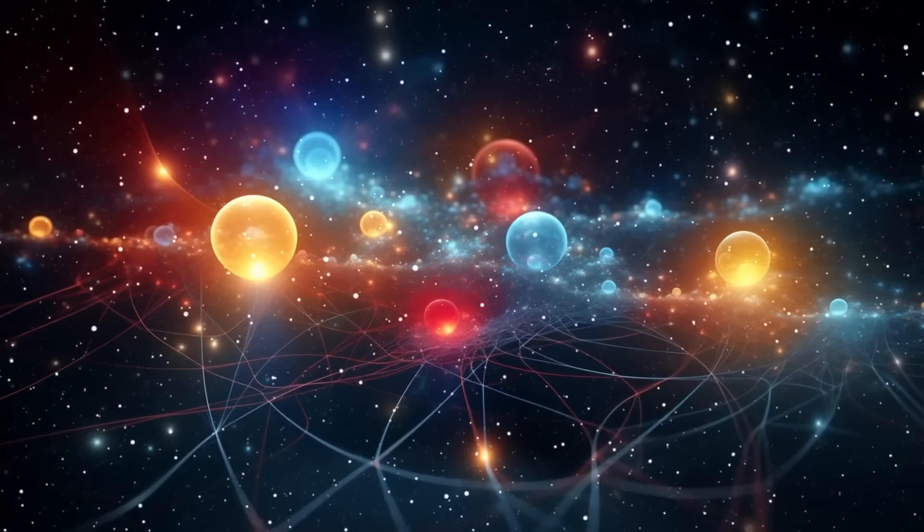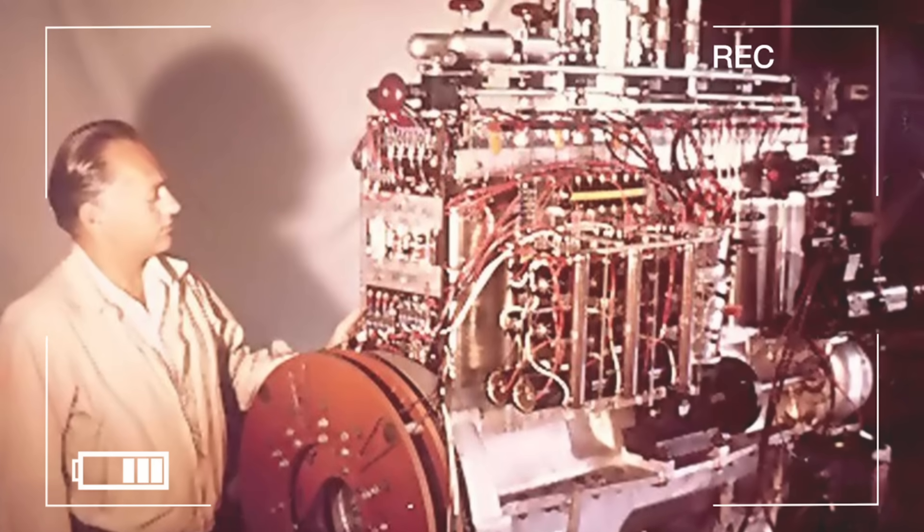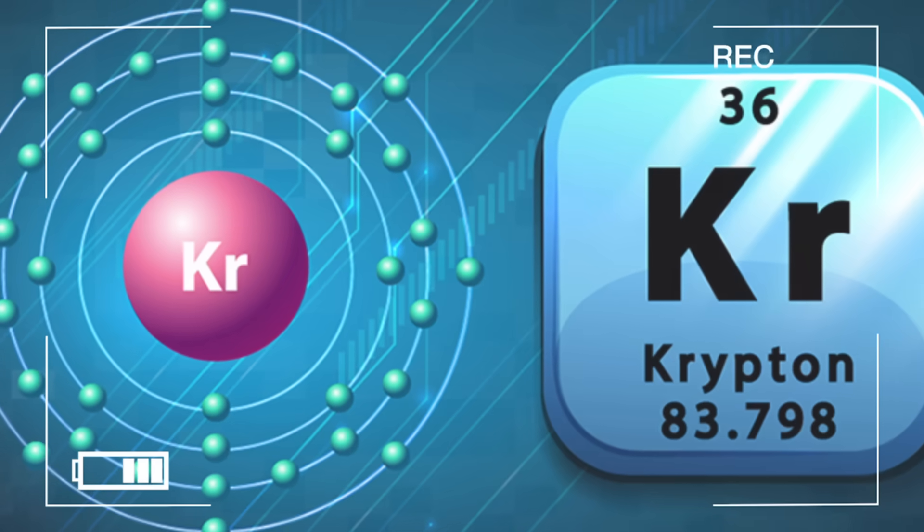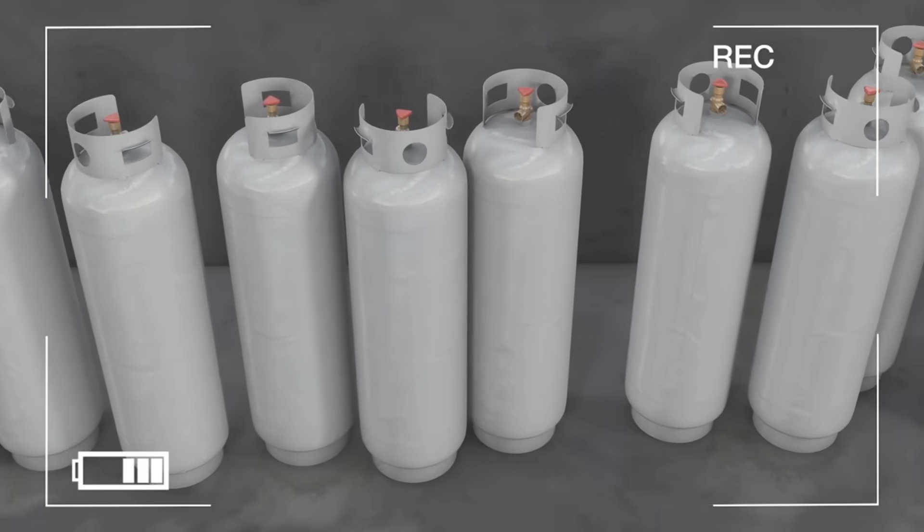The principle sounded simple, yet astonishing. Papp's engine contained a sealed mixture of noble gases—helium, neon, argon, krypton, and xenon—inside heavy-duty cylinders.